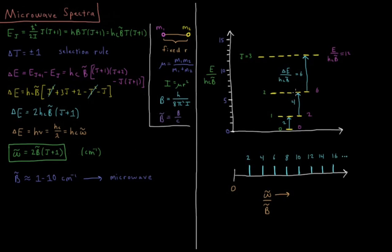What that gives us is a spectrum where every 2 b bar we have another peak. We have the jump from 0 to 1, 2 hc b bar. Jump from 1 to 2, 4 hc b bar. 2 to 3, 3 to 4, 4 to 5, etc., as long as you have energy levels to excite.